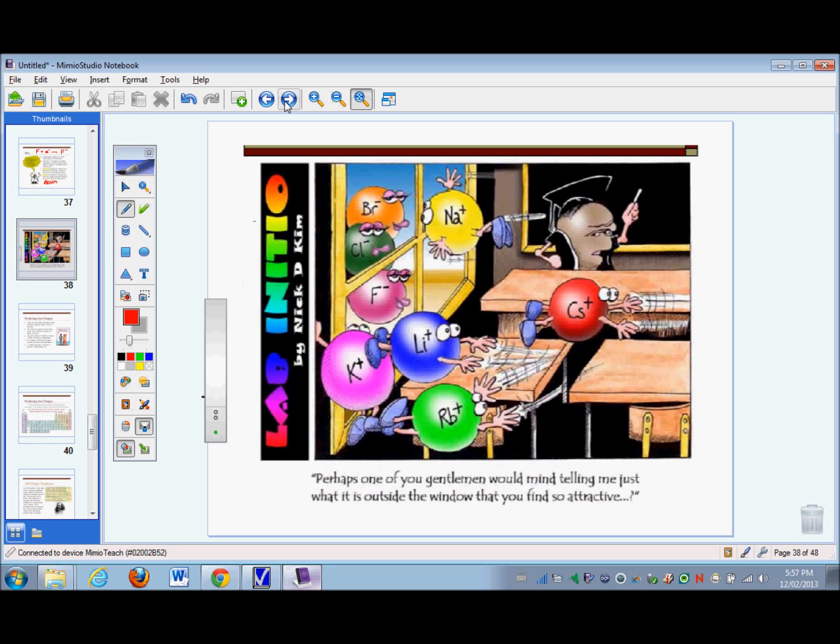Here's a simple little cartoon that gets the point across. The teacher's teaching a bunch of elements from the first column of the periodic table: sodium, cesium, lithium, potassium, rubidium. And you'll notice they're all positively charged. They're all cations. Outside the window, there are some very attractive looking anions: Br minus, Cl minus, and F minus. And we all know, in the homophobic world of chemistry, that opposites attract. And so the positive cations are being attracted to the negative anions.